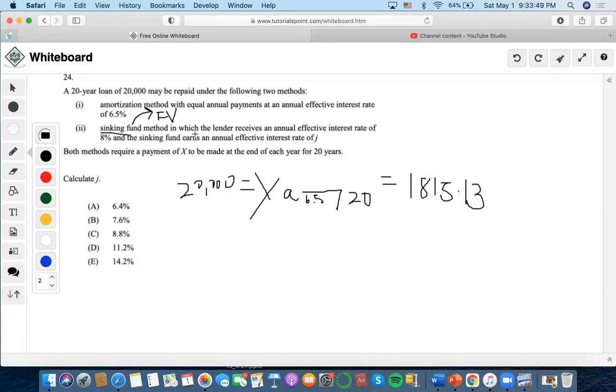So when we receive an annual effective interest rate of 8%, it's pertaining to this rate multiplied by the loan, as always. So 20,000 times 8% would be $1,600.